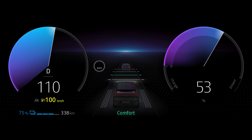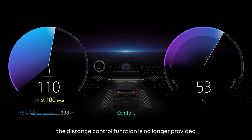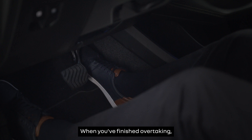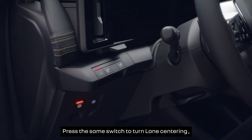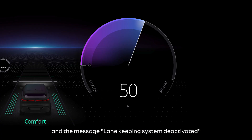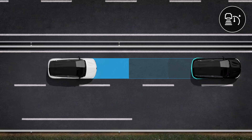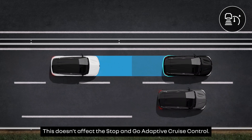If the distance from the vehicle in front is less than you have selected, the distance control function is no longer provided and the programmed following distance bar flashes on the instrument panel. When you've finished overtaking, gently release the accelerator pedal to restart Active Driver Assist. Press the same switch to turn lane centering off, and the message 'Lane Keeping System Deactivated' will appear on the instrument panel. This doesn't affect the stop-and-go adaptive cruise control.